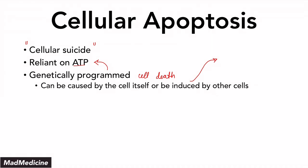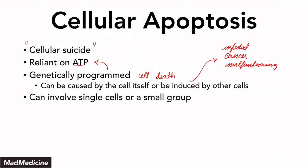For example, if you have an infected cell, you might want to kill that cell off. If you have a cancer growing, you want to kill it off. Or if you have a malfunctioning cell, you might want to kill it off as well. So these are just some of the reasons why another cell can induce apoptosis.